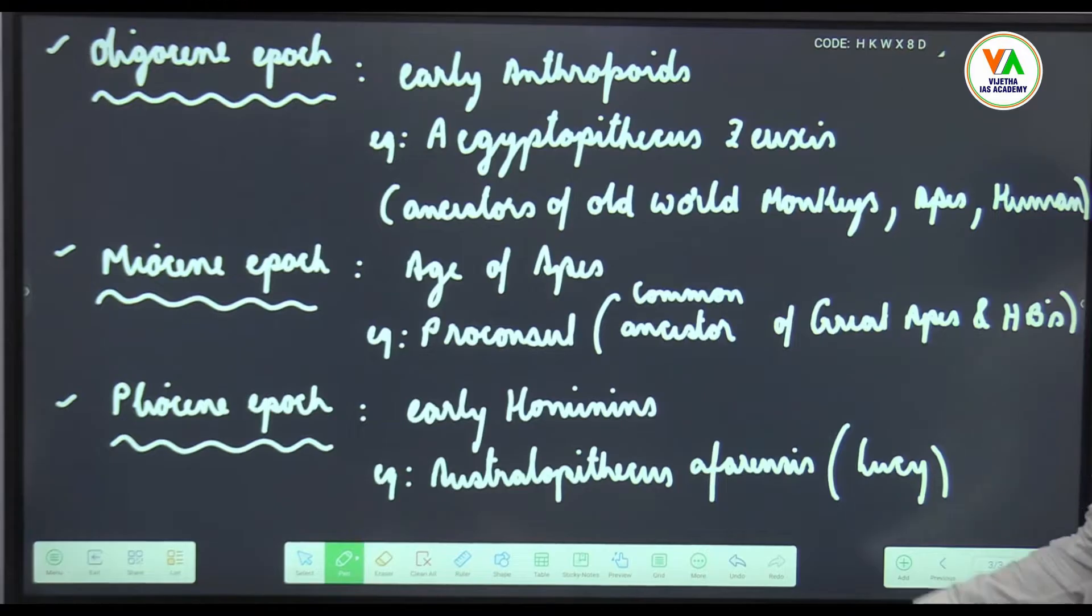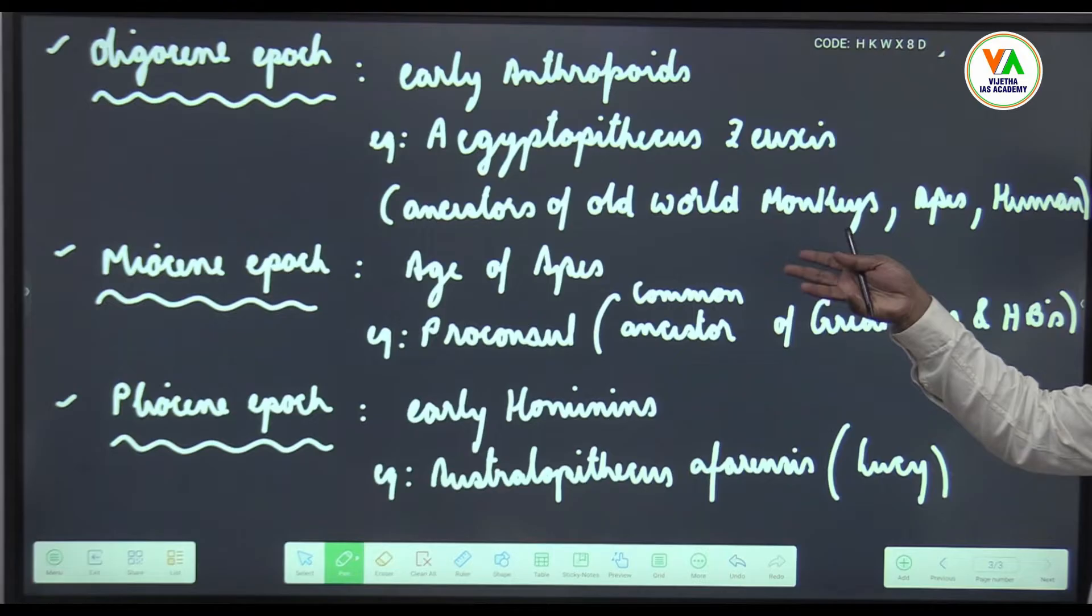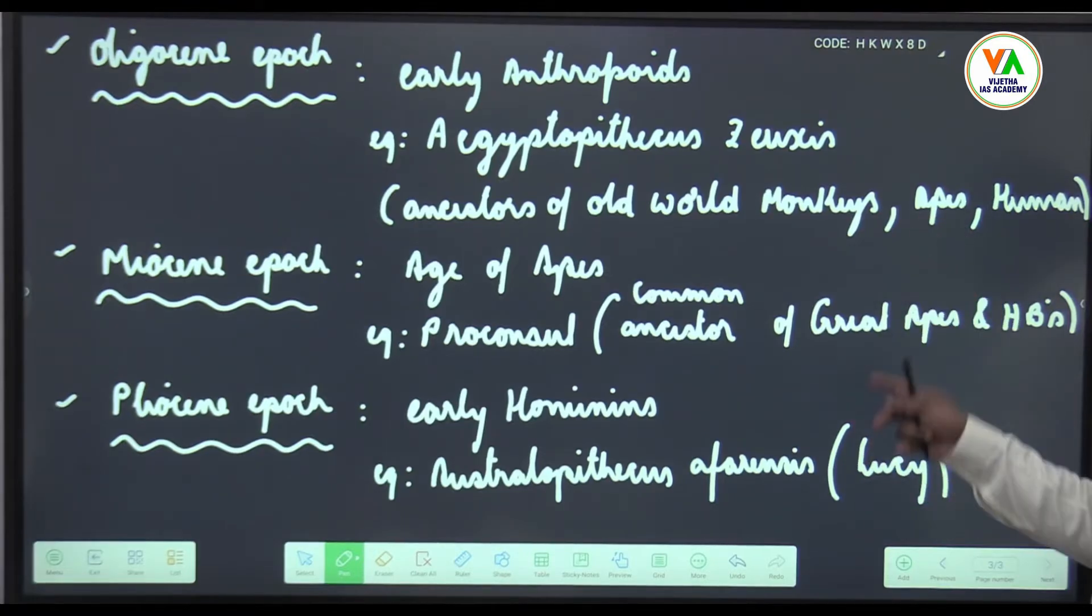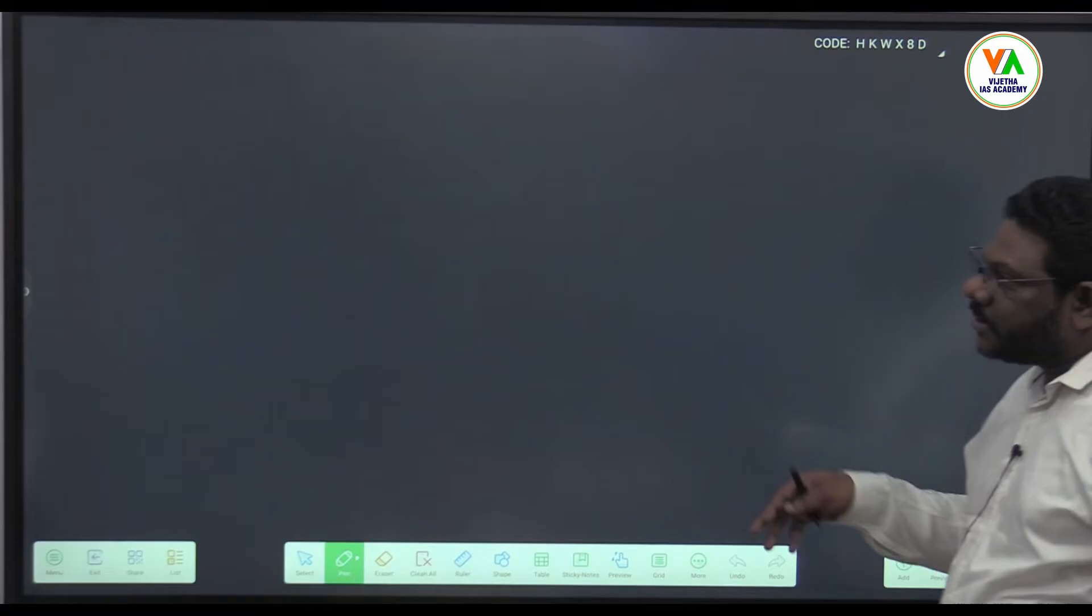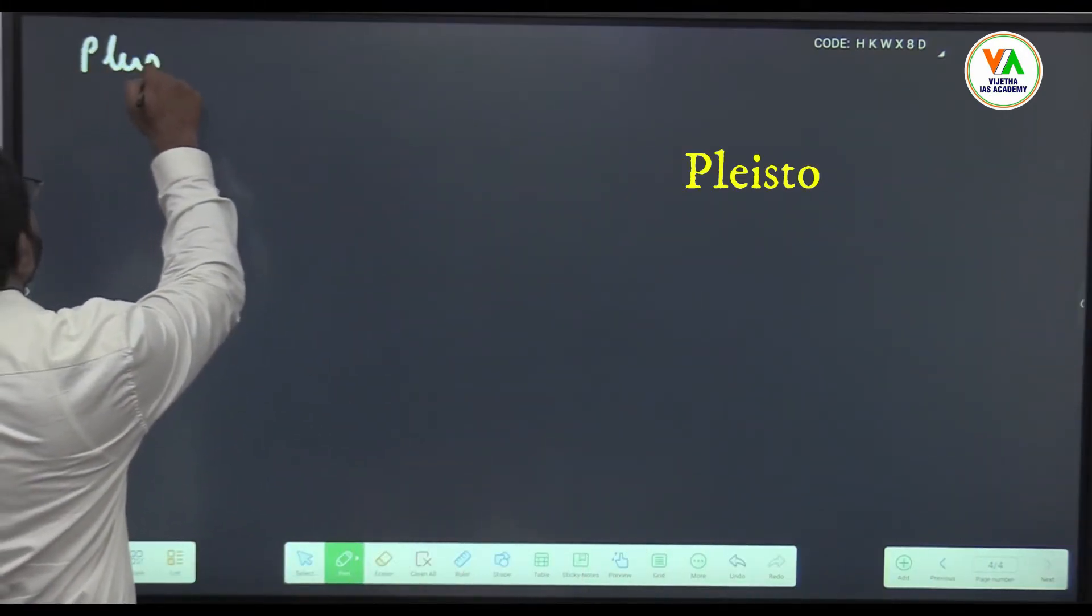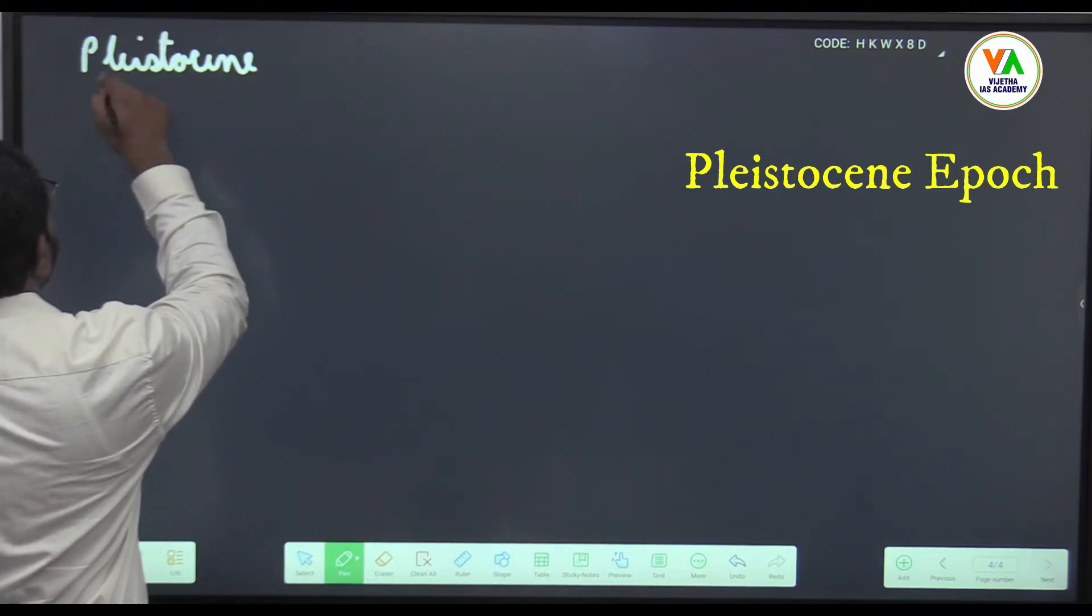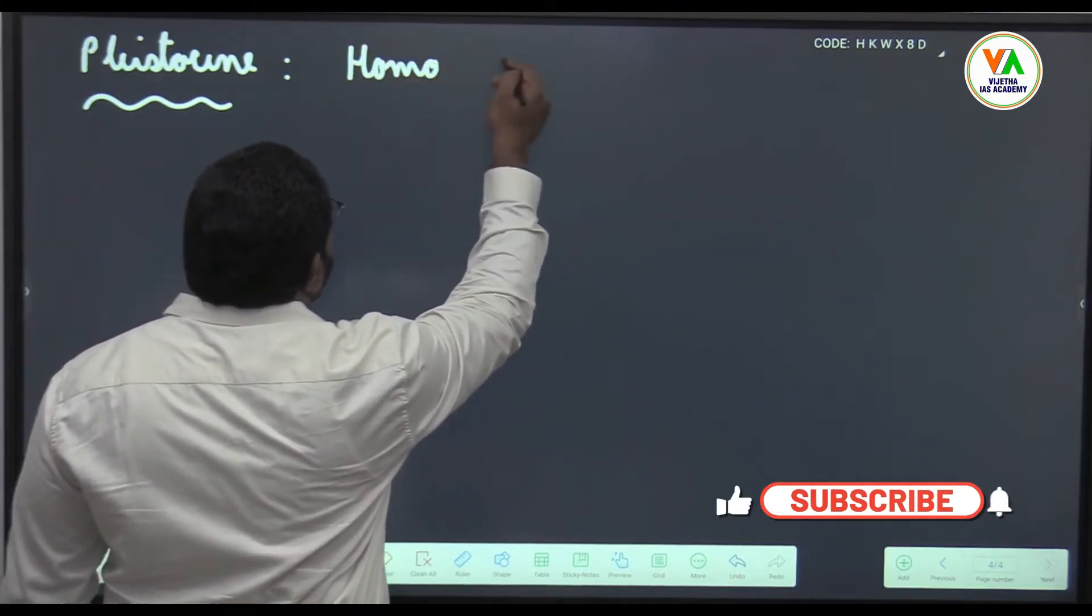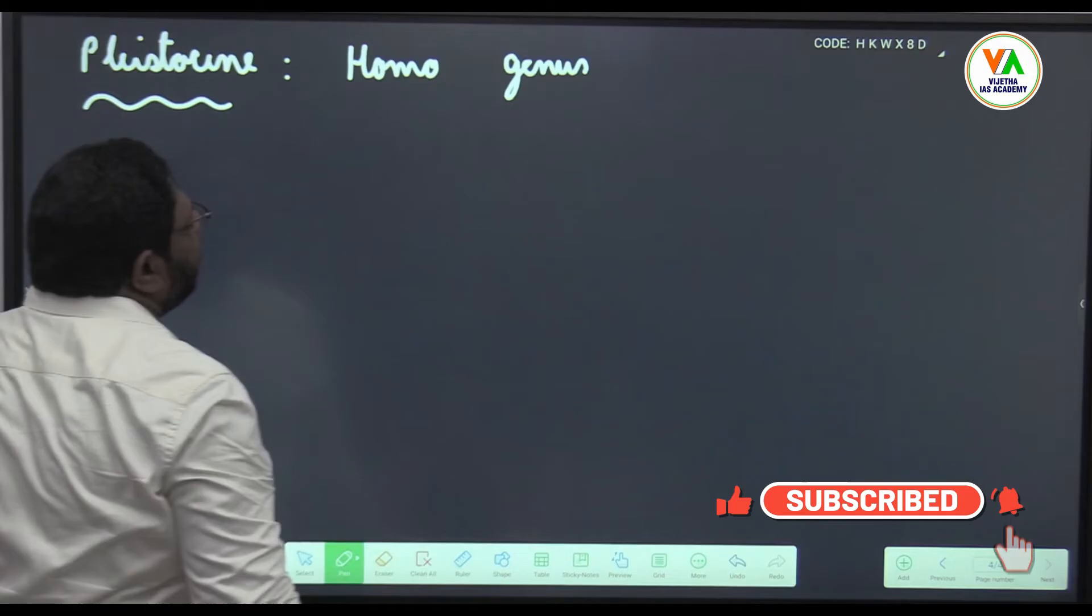This is the overall account. You have a topic tertiary and quaternary fossils. These are all tertiary fossils. Quaternary starts with the Pleistocene epoch, so Pleistocene belongs to genus Homo. Genus Homo came into existence.